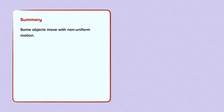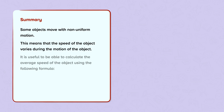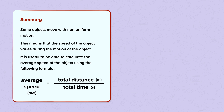In summary, some objects move with non-uniform motion. This means that the speed of the object varies during the motion of the object. It is useful to be able to calculate the average speed of the object using the formula: average speed is equal to total distance divided by total time.